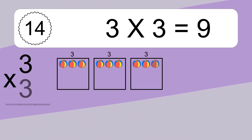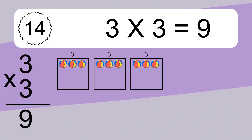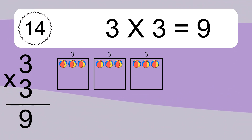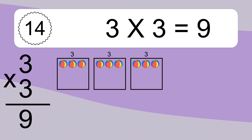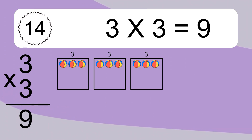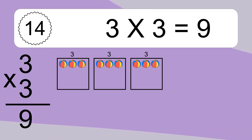3 times 3 equals what? 3 times 3 equals 9. We have 3 boxes, and each box has 3 colorful balls inside. If you count all the balls in all the boxes together, you will have 3 times 3 balls. This equals 9 balls.